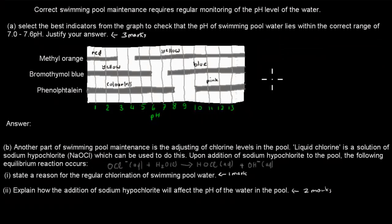Welcome back. For this kind of question, for the first part, you should figure out what they're actually asking you to do. Select the best indicator. So it's saying the best indicator, not two indicators, just the best one, just one. From the graph, check that the pH of swimming pool water lies within the correct range of 7.0 to 7.6. And we also have to justify, so we have to say why we've chosen that one. That's worth three marks.